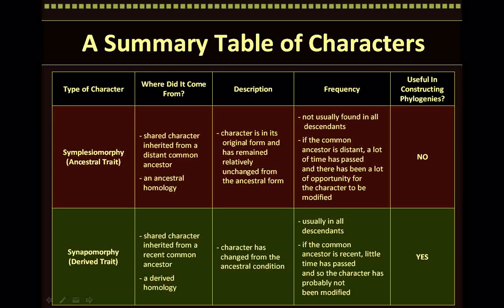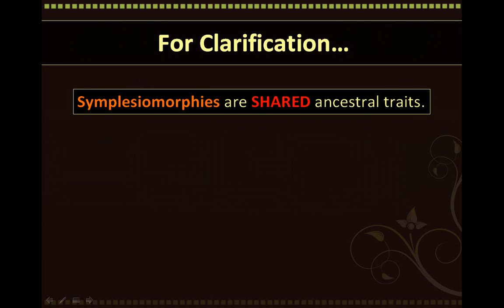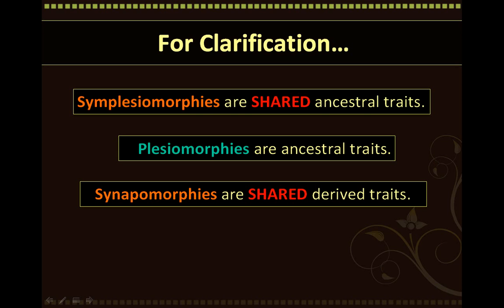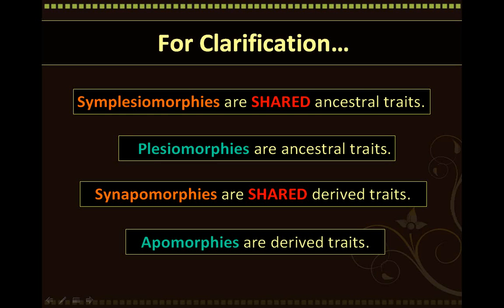Here's a summary table reiterating some of the points discussed about both simplesiomorphies and synapomorphies — feel free to review this table in your own time. To clarify some vocabulary: simplesiomorphies are shared ancestral traits, while a plesiomorphie refers to an ancestral trait in just one organism alone. Similarly, synapomorphies are shared derived traits, while an apomorphie refers to a derived trait in just one organism.